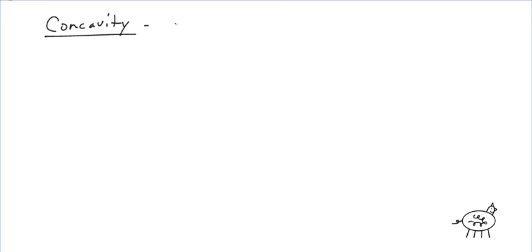Basically, concavity is change in the slope of a line. Remember the first derivative? The first derivative was the slope of the line — change in position over change in time, like velocity. Well, this is change in slope over change in time, so maybe it's going to be the second derivative? Interesting.